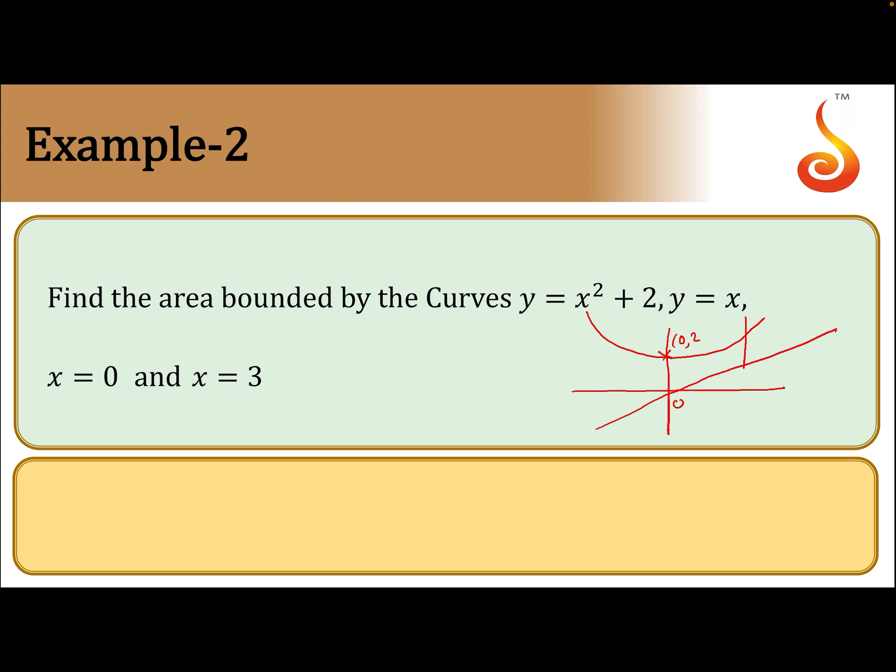This line y = x, x = 0, and this line x = 3. So this is the shaded area. The required shaded area is the integral from 0 to 3 of (x² + 2) dx minus the integral from 0 to 3 of x dx.